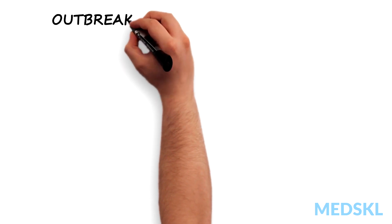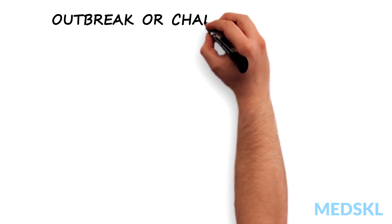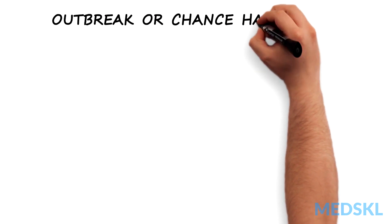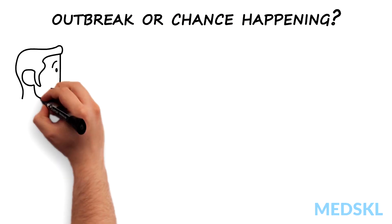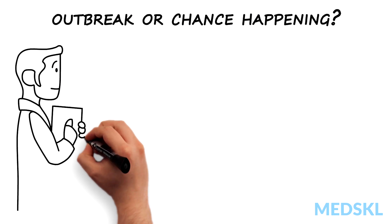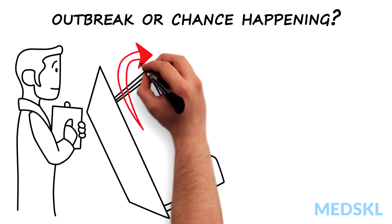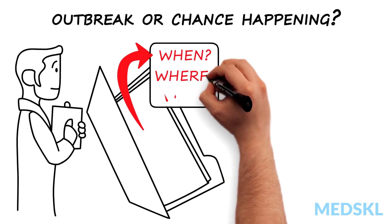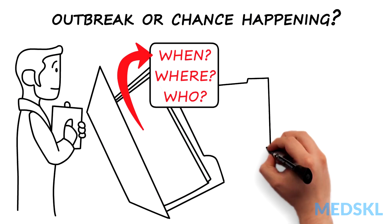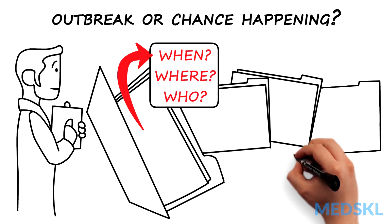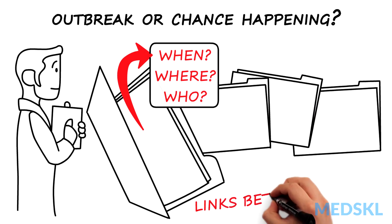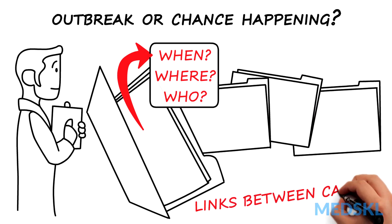Once a problem is identified, the question is whether it is an outbreak or a chance occurrence. We answer this by gathering some basic data about when, where, and who is affected, and the possible links between cases. These data are checked against what we know about the usual occurrence of the disease.